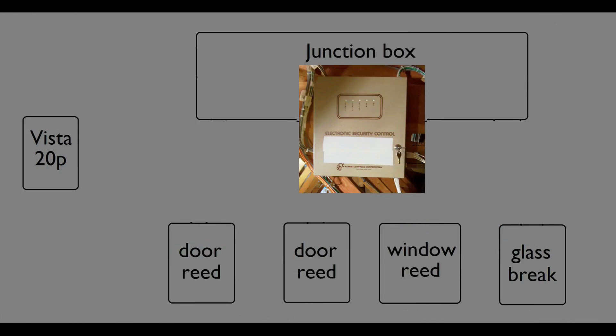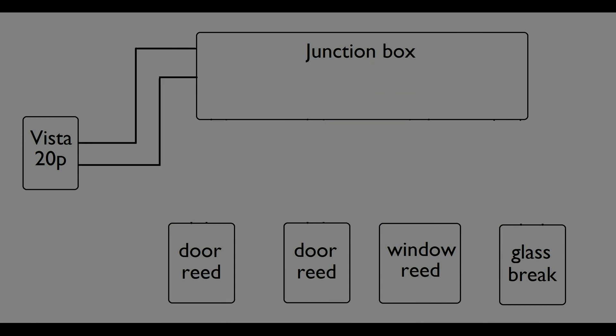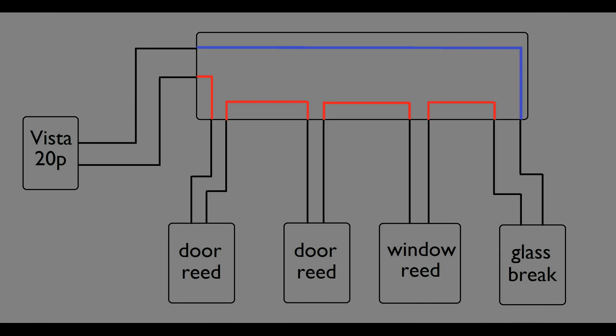I installed a junction box. Inside this box are several terminal boards. Route both of your loop wires from the VISTA up to the junction box, then a set of wires from each of your sensors. At this point, finishing the circuit is a simple matter of hooking up jumpers in the junction box.